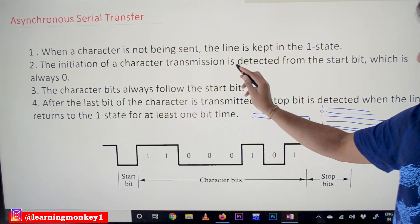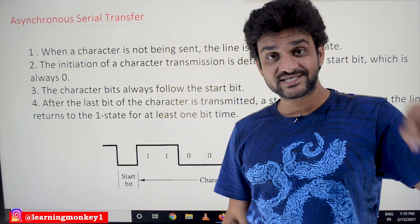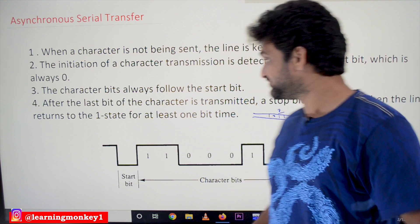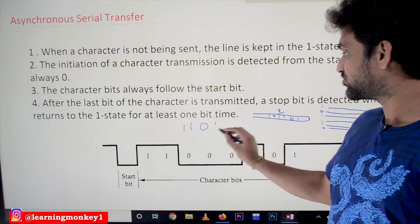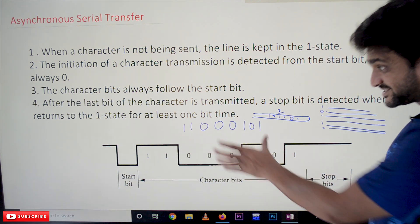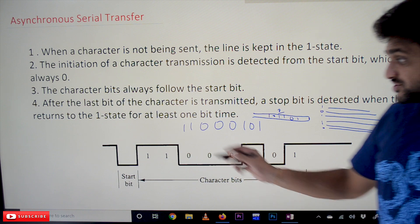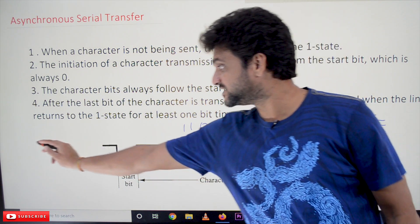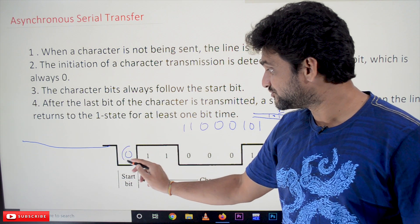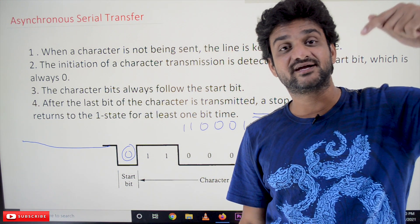The initiation of the character transmission is detected from the start bit, which is always 0. Whenever we press a key, that initiates the character transfer. For example, if the character to be transferred has a code of 0, 1, 0, 1 — that 8-bit code has been pressed on the keyboard — the start bit is always going to be 0. When the line goes from 1 to 0, the destination understands that this is where the character starts.